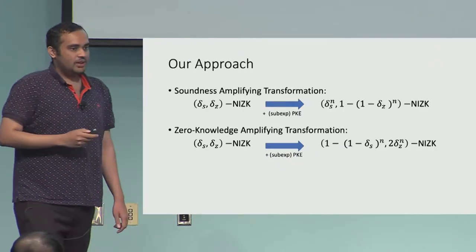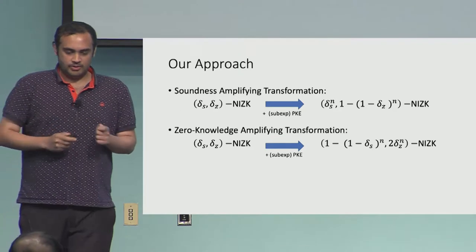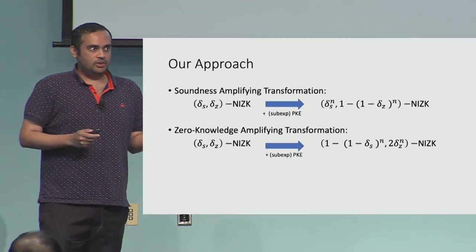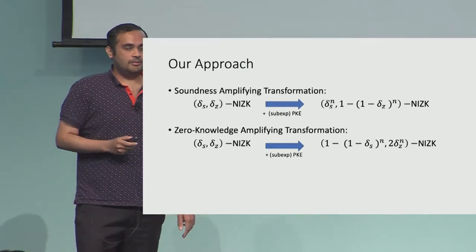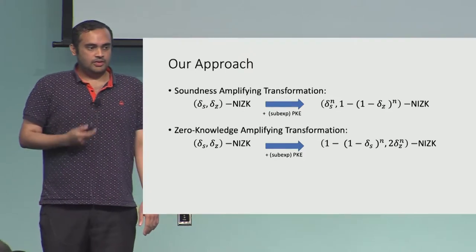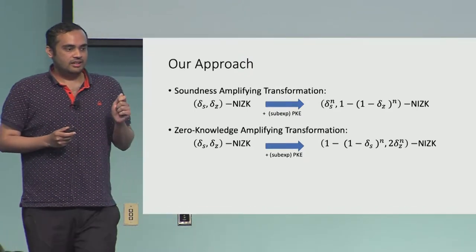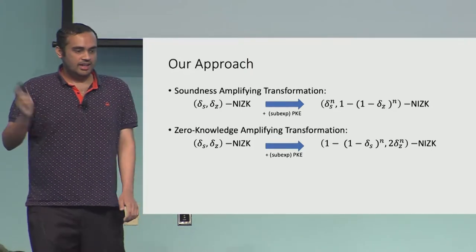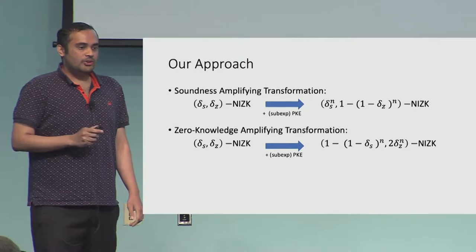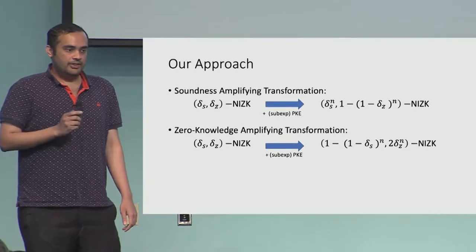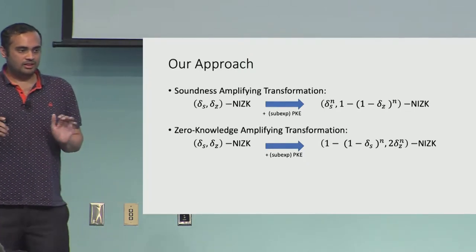The overall approach defines two transformations used one after another. The first is a soundness-amplifying transformation. It takes a (δS, δZ)-NIZK with sub-exponential PKE and improves soundness from δS to δS^N, where N is any polynomial parameter of your choice. However, it doesn't kill the zero knowledge property completely — it goes from δZ to 1 minus (1 minus δZ)^N.